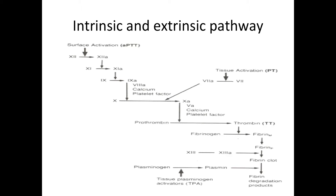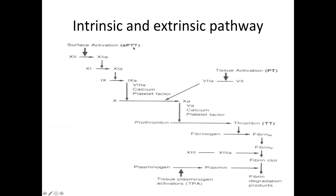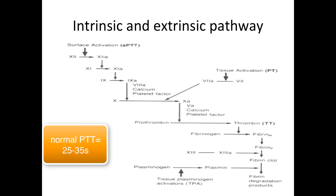As soon as there is an injury, there will be activation of the first clotting factor, which is called factor 12 or Hageman's factor. This plays a major role in the intrinsic pathway. The intrinsic pathway is measured by PTT — partial thromboplastin time — which measures how long it takes for the intrinsic pathway to become fully active. Normally the interval is between 25 and 35 seconds.